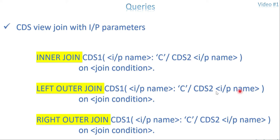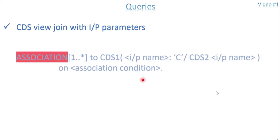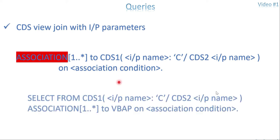For RIGHT OUTER JOIN, the syntax is also the same — CDS input parameter value with colon, hardcoded or dynamic value. However, for associations, you are not able to call a CDS which has an input parameter. So what you can do is change the design to achieve whatever is required. If you try to use ASSOCIATION 1 TO 1 with a CDS that has a mandatory input parameter, you will get a syntax error saying this CDS has a mandatory input parameter.